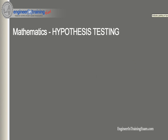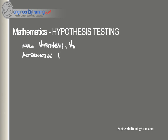There are two types of statistical hypotheses that we need to know. The first being the null hypothesis, denoted H0. And then there's also the alternative hypothesis, or HA.